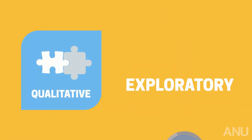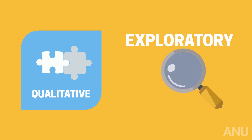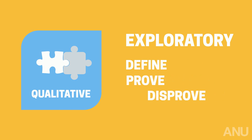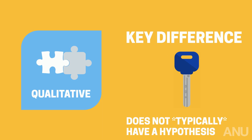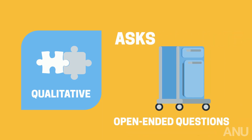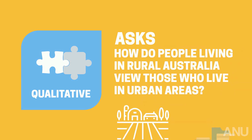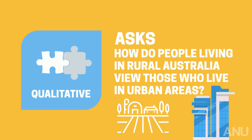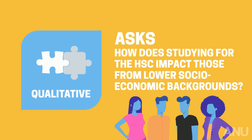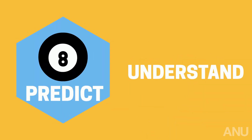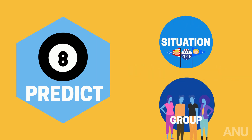In contrast, qualitative research is a more exploratory form of research and is not necessarily trying to define, prove, or even disprove a hypothesis. One key difference is that qualitative research does not typically have a hypothesis. It asks more open-ended questions like: how do people living in rural Australia view those who live in urban areas? Or how does studying for the HSC impact students from lower socioeconomic backgrounds? The goal is not to predict anything, but rather to better understand a unique situation or group of people.